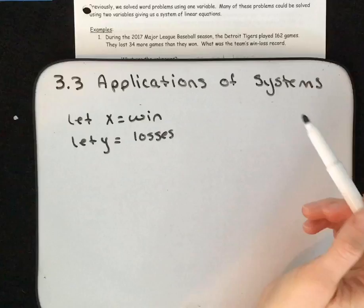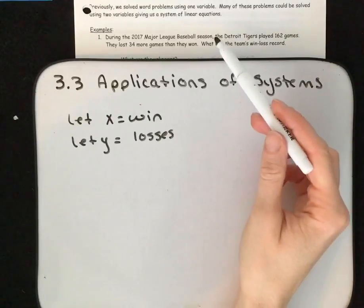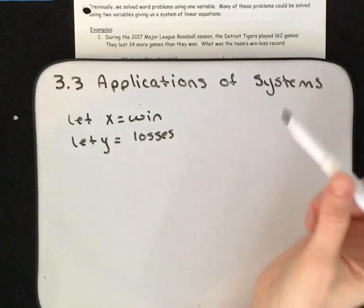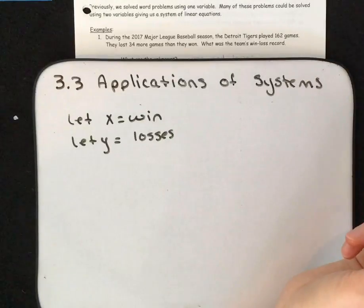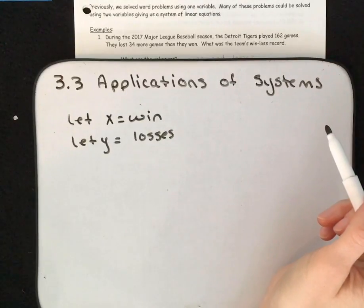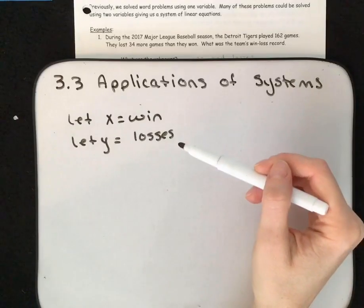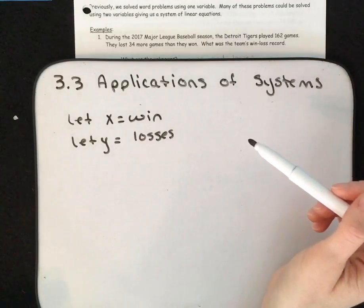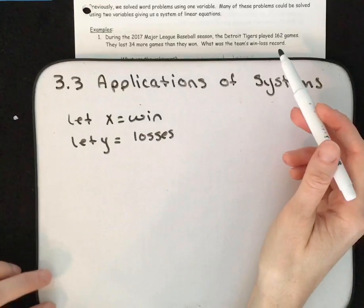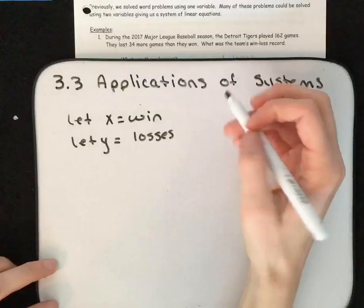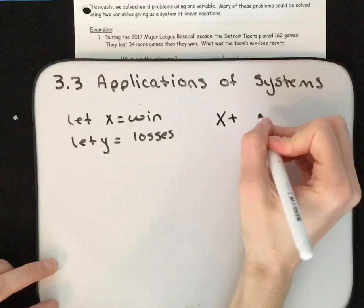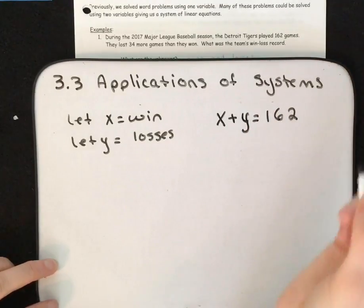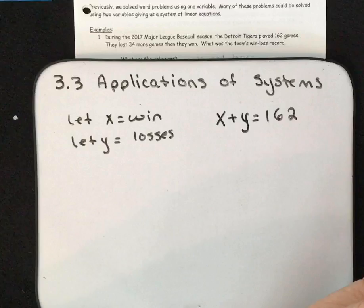Now let's read through. During the 2017 Major League Baseball season — none of that is important. The Detroit Tigers played 162 games — that's important. For the purpose of this application we're going to say that either they won or they lost; we're not going to look at ties. So we have 162 total games, meaning if we add the number of wins plus the number of losses we should get 162. That's our first equation.